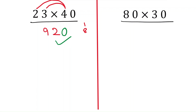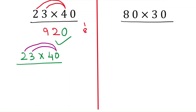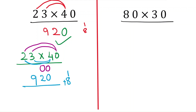Let's verify by doing normal multiplication of 23 times 40. Multiplying any number with zero gives zero — zero times three is zero, zero times two is zero. For four, which is in the tens place, put zero in the ones place; four times three is twelve, carry one; four times two is eight; one plus eight is nine. Adding both rows gives 920 — the same answer. Whenever you have zeros, no need to multiply them; directly multiply the other digits and add zeros at the end.